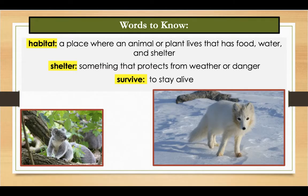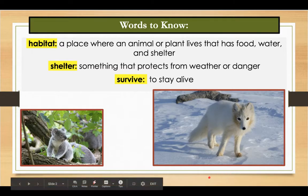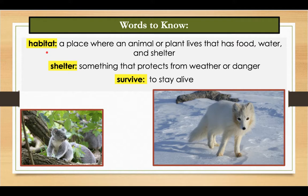As always, there are a few words we need to listen for as we go through our story. The first is the word habitat. Habitat is a place where an animal or plant lives that has food, water, and shelter. An example: the forest is a deer's natural habitat.